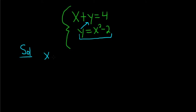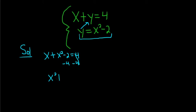So we have x plus, and then instead of y I'm going to write x squared minus 2, and that's equal to 4. Now we can subtract 4 from both sides. So we have x squared plus x, and negative 2 minus 4 is negative 6, and that's equal to 0.